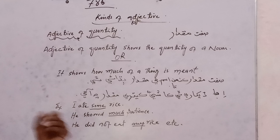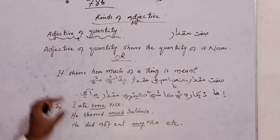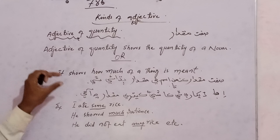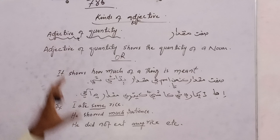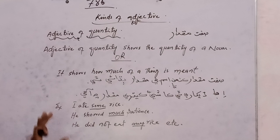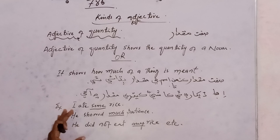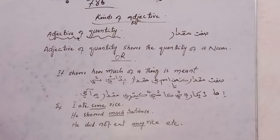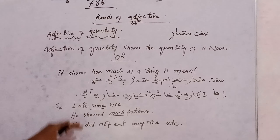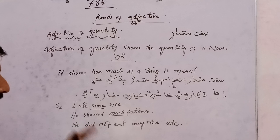These all words — khano, thwo, ghat, bad, kujh — are related to the adjective of quantity. They show how much of a thing is present, indicating the quantity of something, about the quantity of a noun.